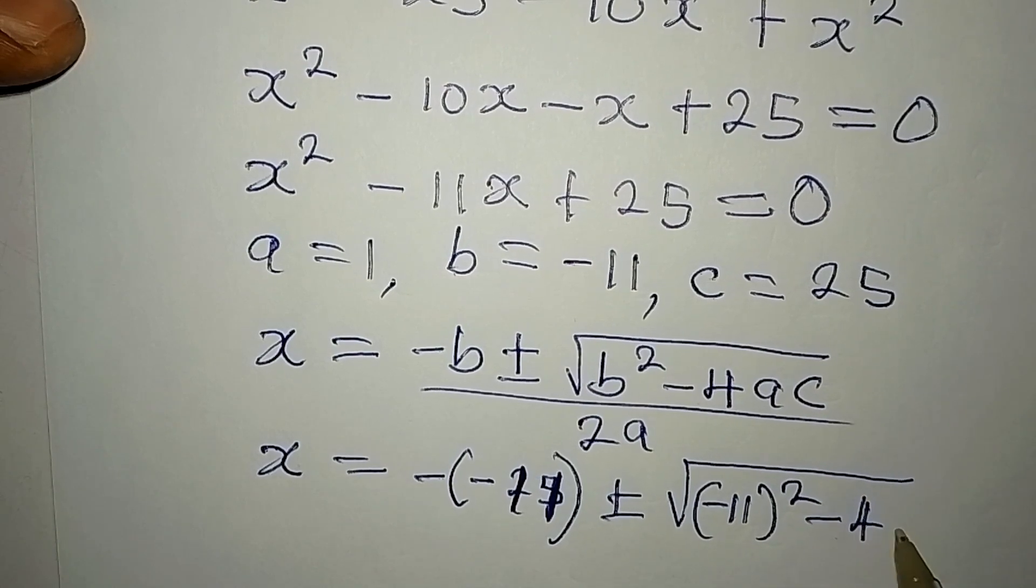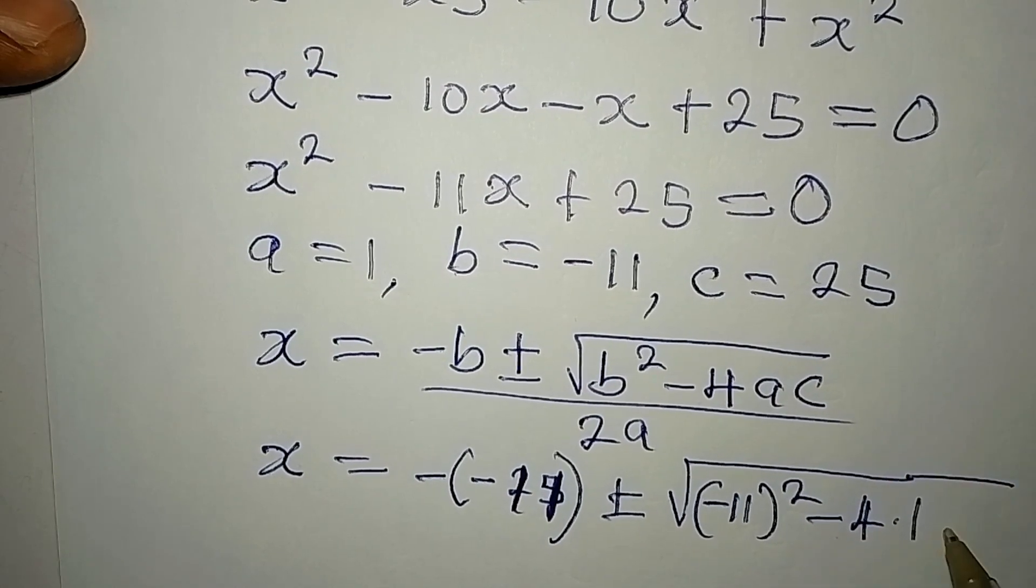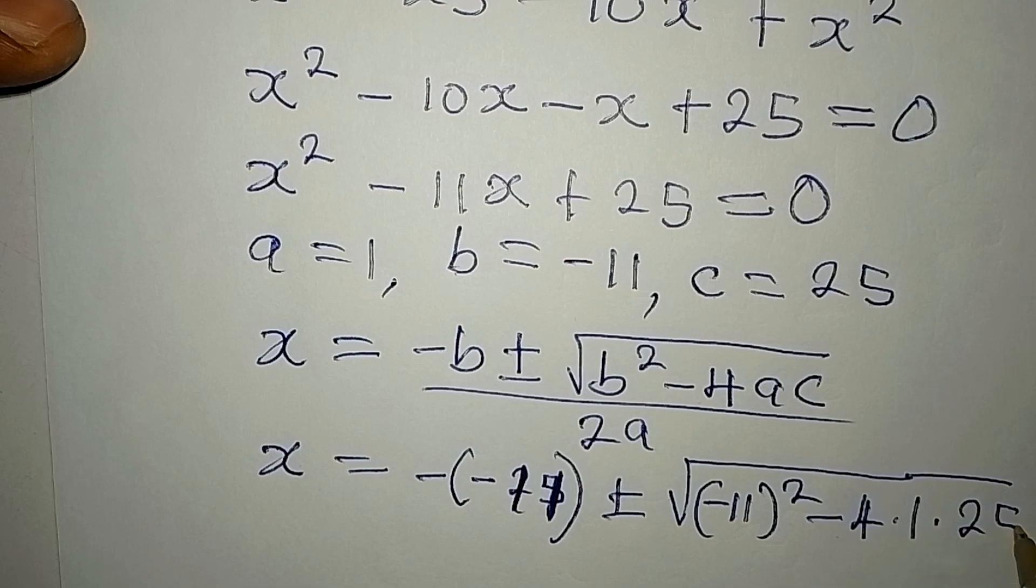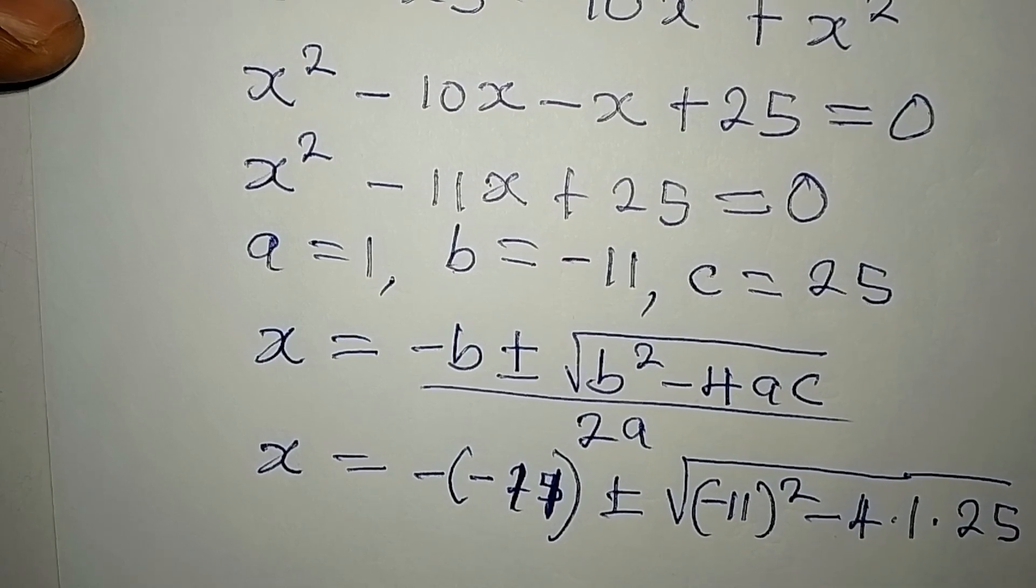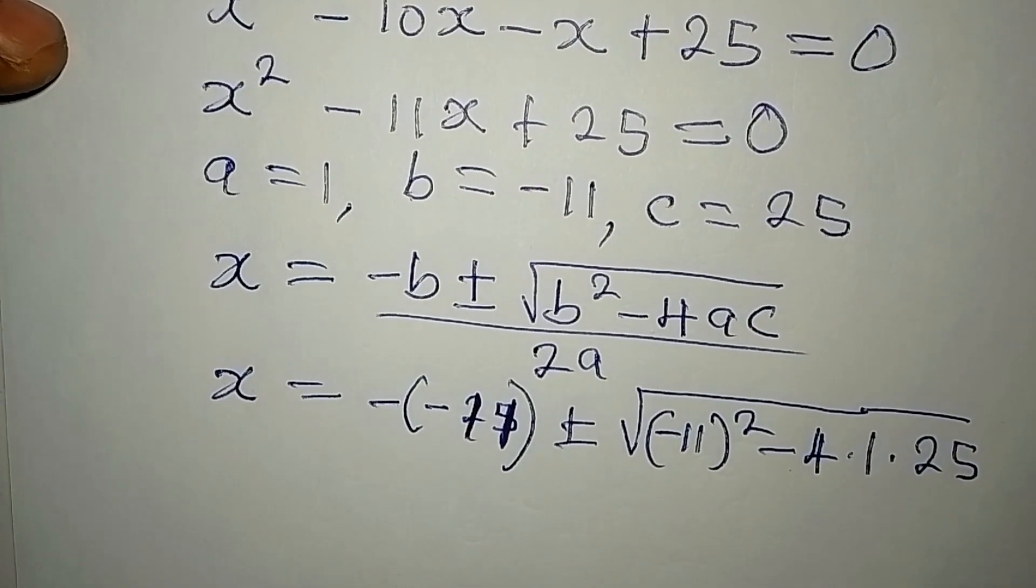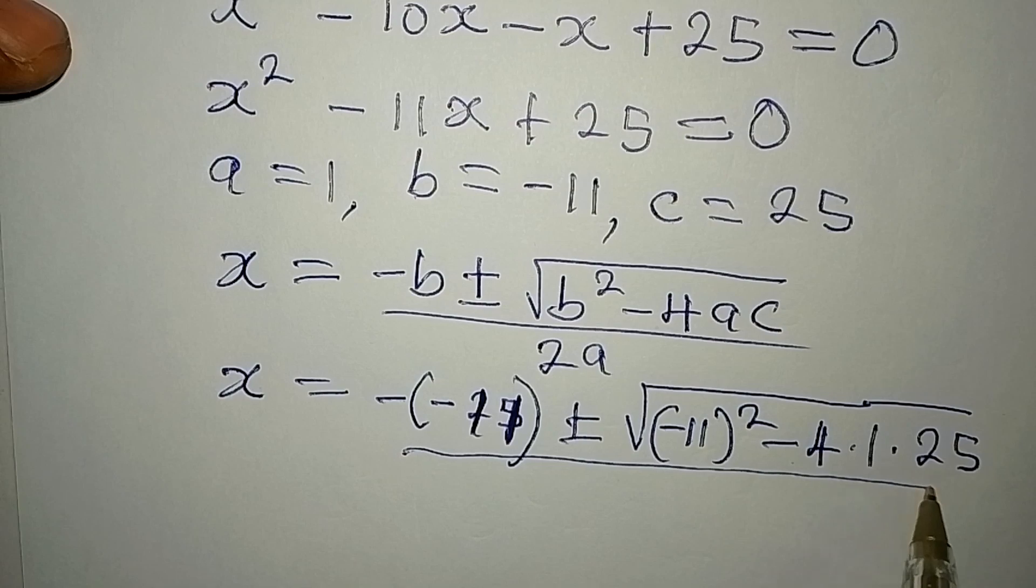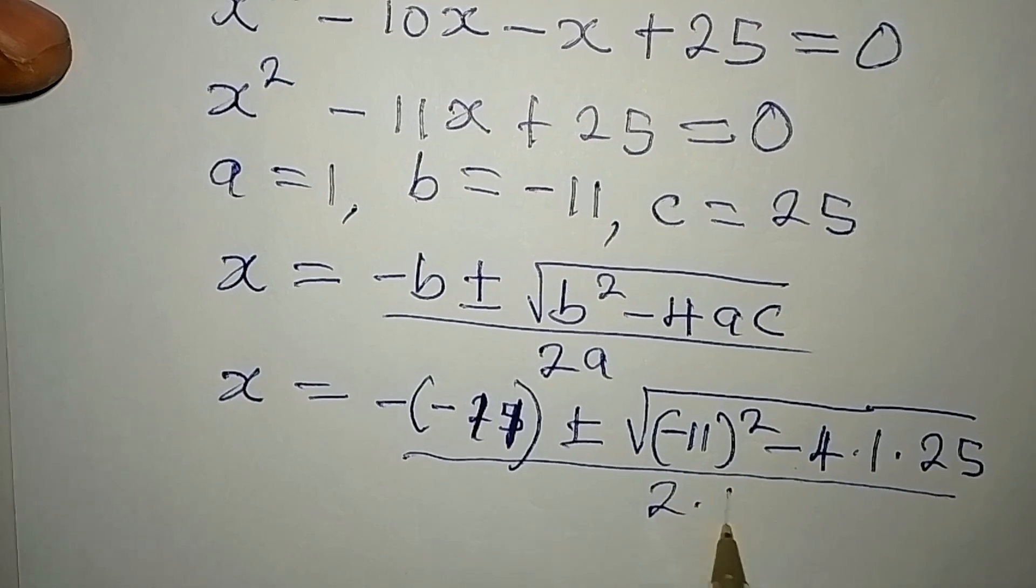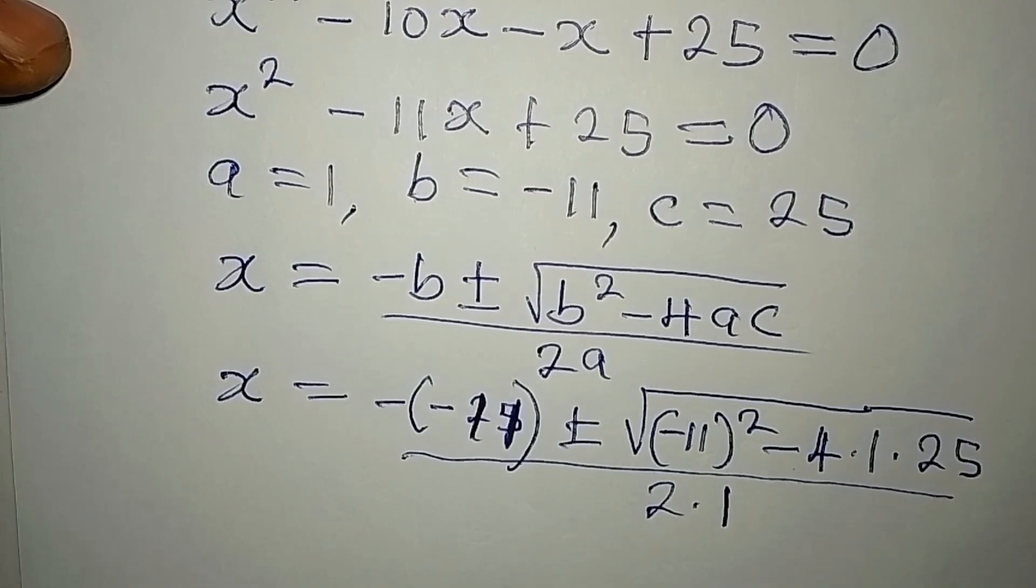minus 4 times a is 1 then times 25. Okay, so we have 25, then the whole of this will be over 2 times 1 because a is 1.